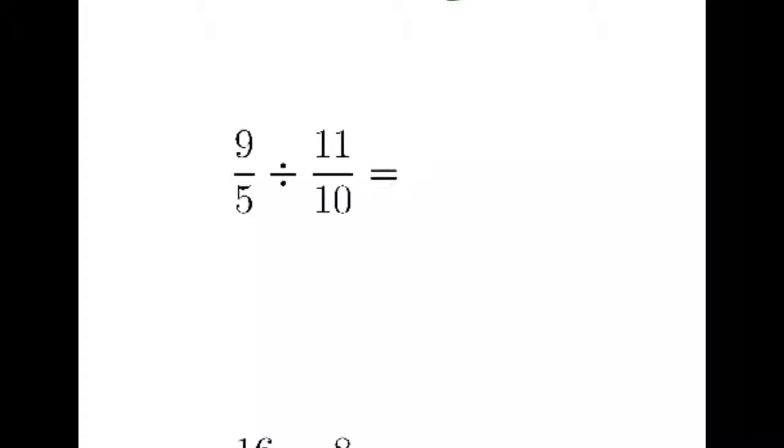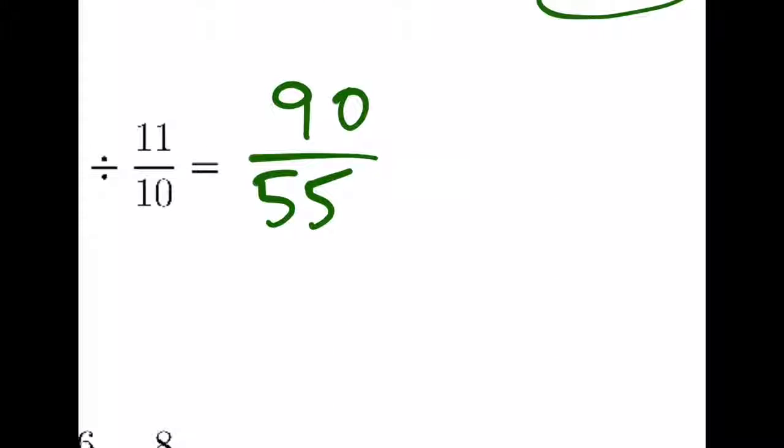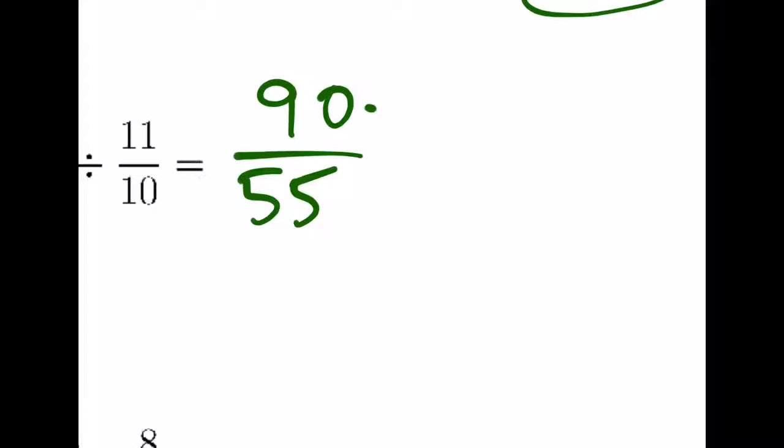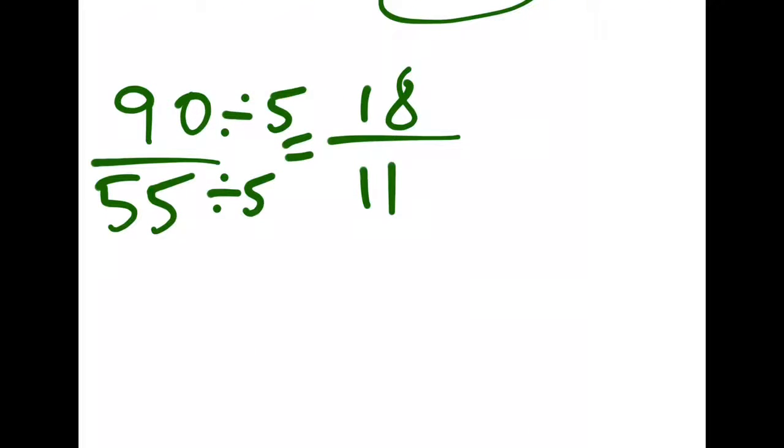We will go down and do the next one. 9 times 10 is 90, 5 times 11 is 55. We notice that 5 goes into both of these, so we will divide 5 from the top and the bottom. This gives us 18 on the top and 11 on the bottom. 11 is a prime number so there are no factors that go evenly into it, therefore it is our final answer.